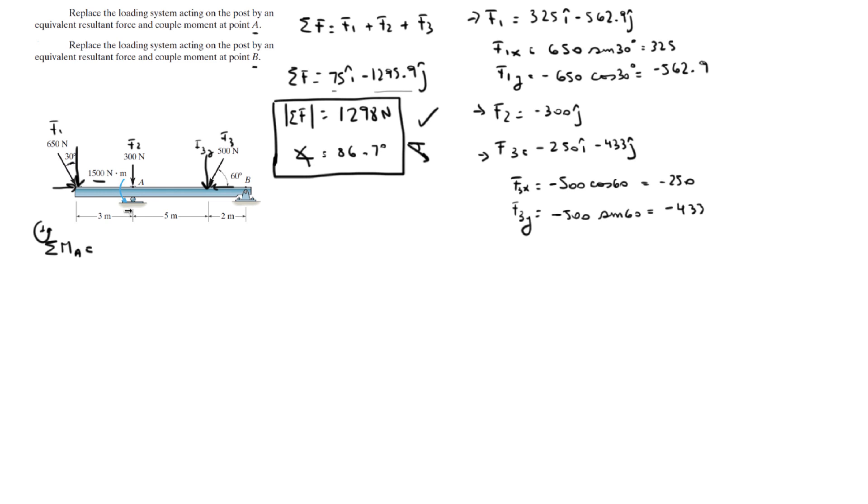F1 in the y, and we have this 1500 Nm moment right here. So the moments about A are F1y times 3, and it's positive because it's creating a counterclockwise moment, minus F3y times 5, and it's negative because it's creating a clockwise moment, plus 1500. Once you plug in F1y and F3y, you're going to get that the moment is 1023.7 newton meters counterclockwise because it's positive.